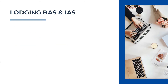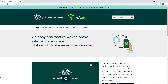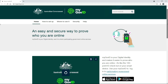Another way you can lodge activity statements prepared in Xero is manually via the Online Services for Business portal. To use this, there are a few things to set up first. You need a myGovID, which is different from myGov — a personal myGov account won't work. To set up myGovID, go to www.mygovid.gov.au, which is this web page here.